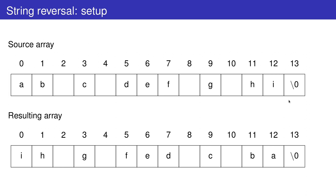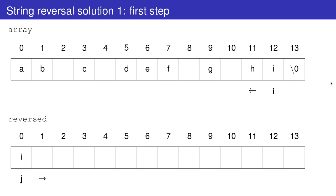In C, strings are represented with char arrays, so we can use indexing to address each element. Let's say that we have this string, which is 14 characters long, and we'll save our reversed string in this new array. To do this we need two indices, i and j. i is used in the original array and will move backwards, while j will move forwards in the second array.